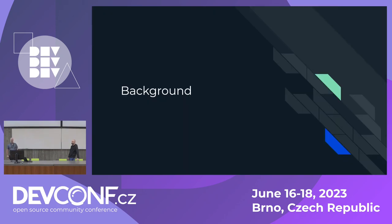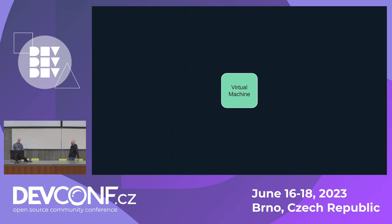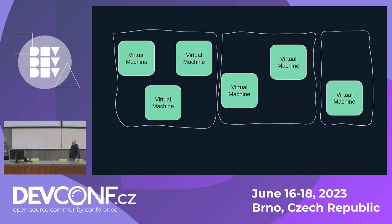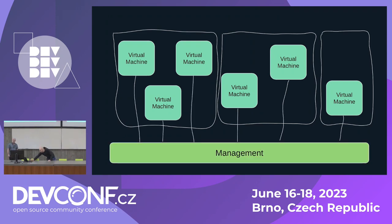A little bit of background and context. At the beginning we just had a virtual machine and life was really simple — we just had to manage that one. Then we had many virtual machines on many nodes and it was getting difficult, so we invented management. Projects like oVirt and OpenStack manage virtual machines and others.